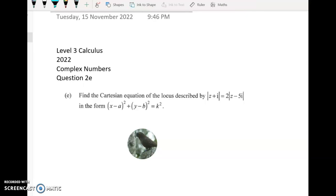Kia ora, here's question 2e from this year's complex numbers paper. So this is another locus question. You're not asked to draw the locus, you're just asked to find the Cartesian equation of the locus and get it into this form here. When you look at this you should see that that is the equation for a circle with a center at (a,b) and radius k.